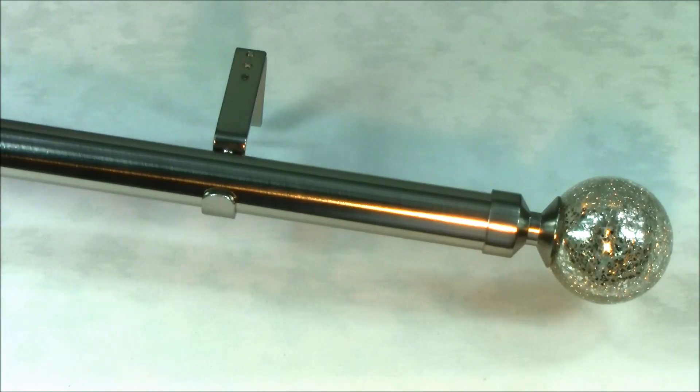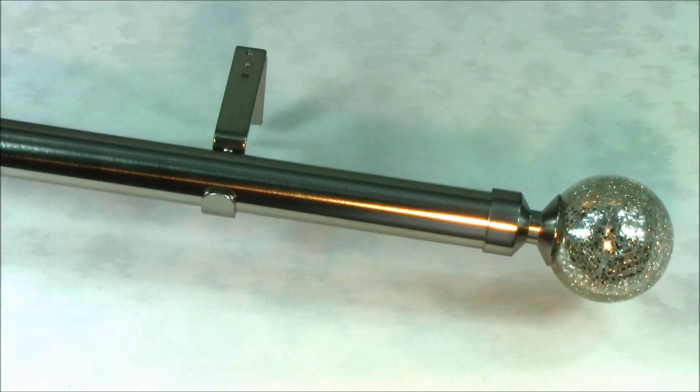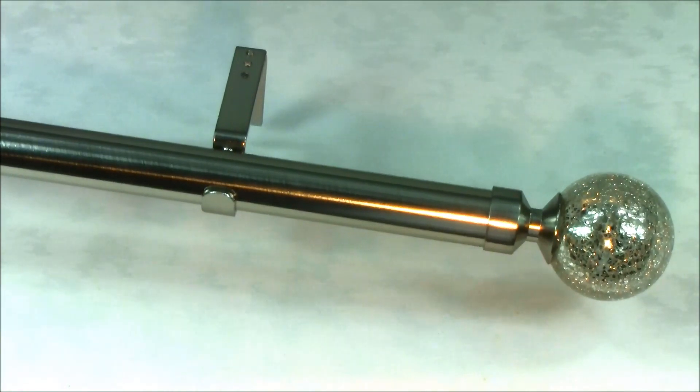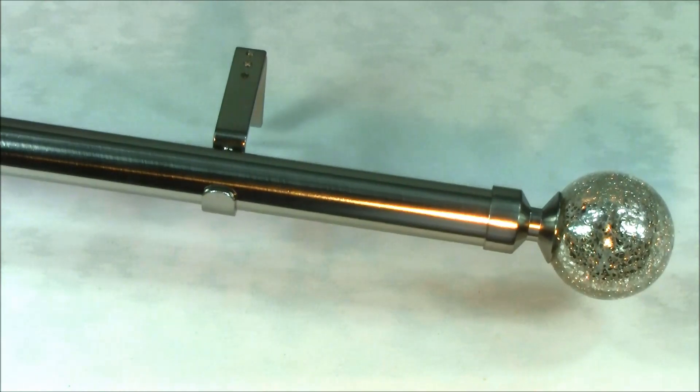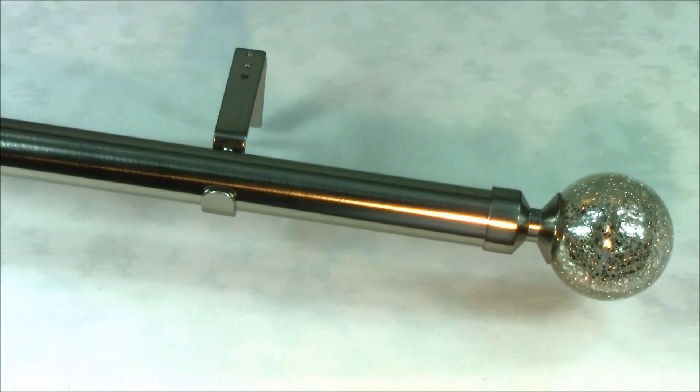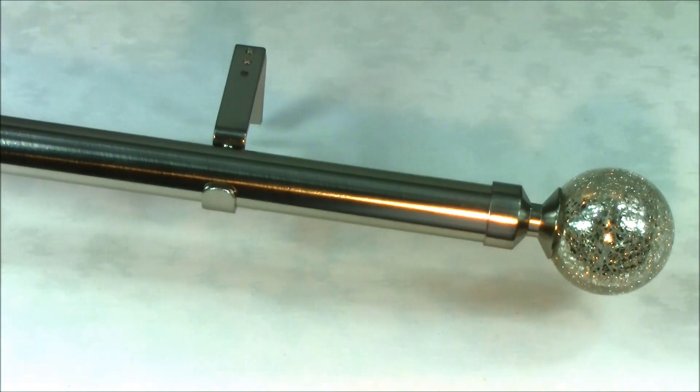The Empire curtain pole is available with curtain rings for curtains with standard headings such as pencil pleat and pinch pleat curtains. Matching three-sided and five-sided bay window poles are also available.